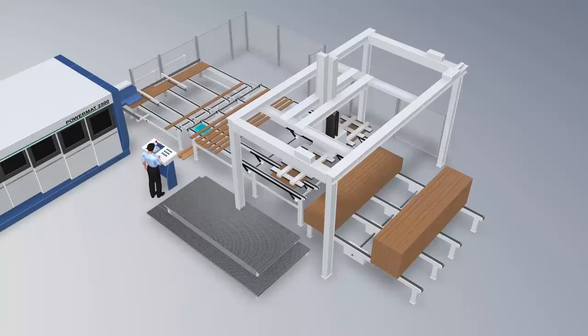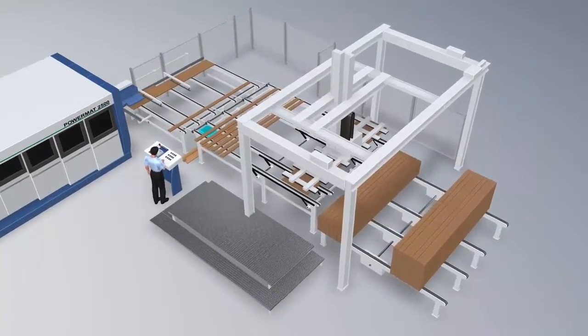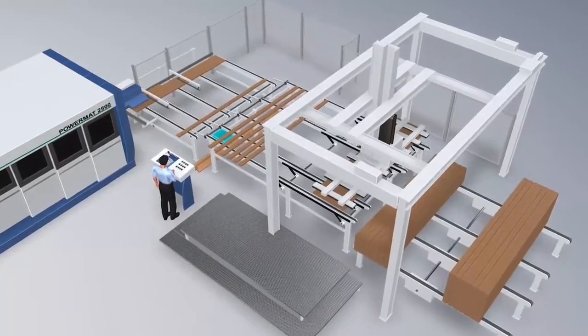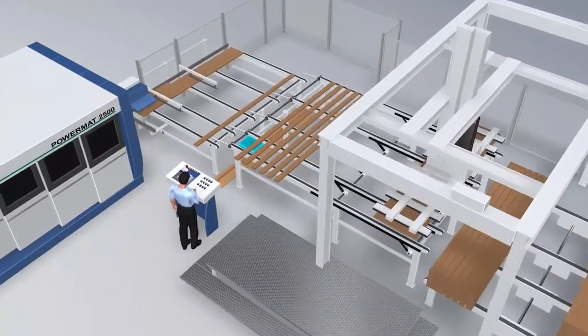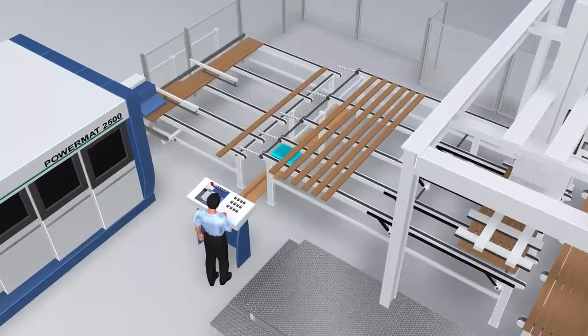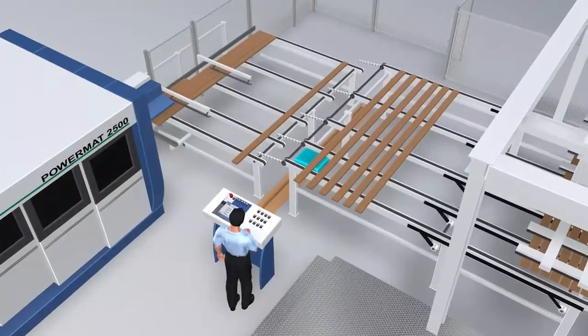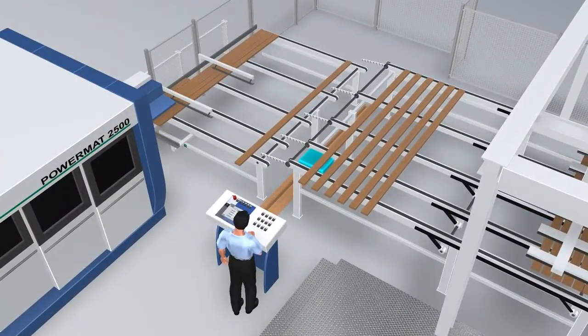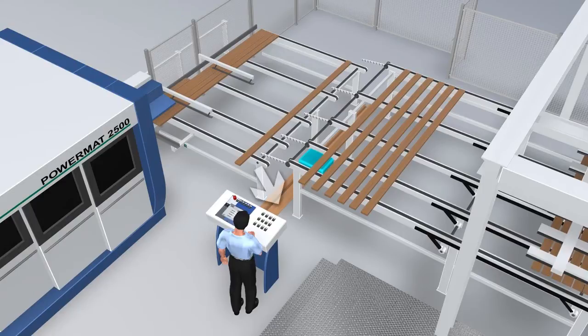To integrate tilt house or robots as destacking units can be done without a problem if requested. On the cross transfer the boards are singulated to allow a moisture measurement. Boards with unacceptable moisture content are automatically discharged.